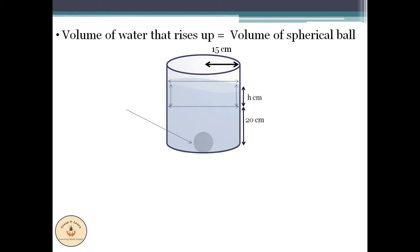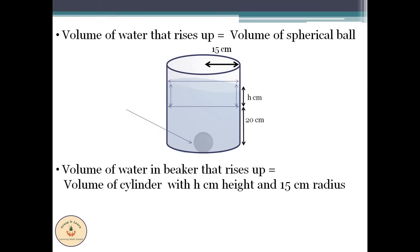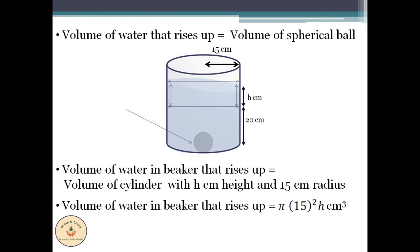Thus, the volume of water that rises up is equal to the volume of a cylinder with h cm as the height and 15 cm radius, because water normally takes the shape of the container. Therefore, volume of water that rises up is equal to π × 15² × h cm³. The formula of volume of a cylinder is πr²h, and the unit for volume is always in cubes.